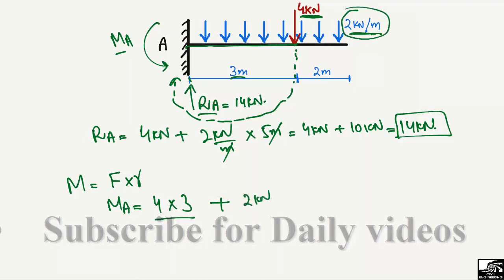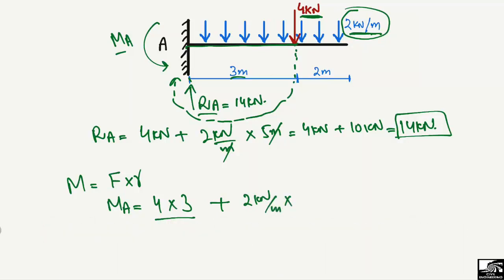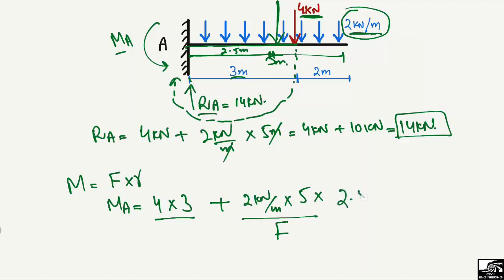The second moment is from the distributed load: two kilonewton per meter multiplied by the total length of five meters, acting at the centroid of the beam which is 2.5 meters from the left end (five divided by two). So the moment arm is 2.5 meters, giving two times five times 2.5 equals twenty-five kilonewton meter. Adding both: twelve plus twenty-five equals thirty-seven kilonewton meter. So MA equals thirty-seven kilonewton meter.